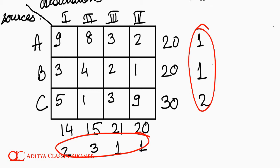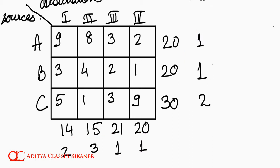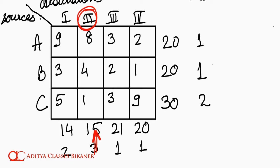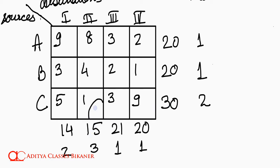We should try to minimize our losses — specifically avoid the loss of 3 rupees, which is the biggest penalty. So we give the first chance to market 2 to avoid that loss of 3. Market 2 will rush to the cheapest cell available, which is cell C2. How much can it import from this cell? C is producing 30 and market 2 needs 15. So market 2 can import 15 units, giving us an assignment of 15 at cell C2.